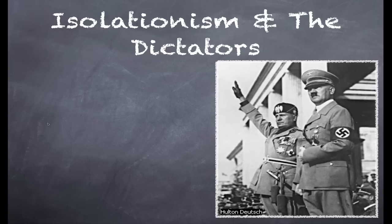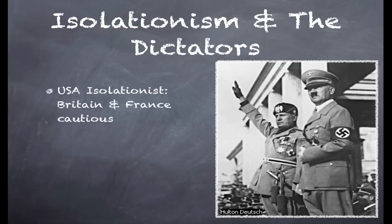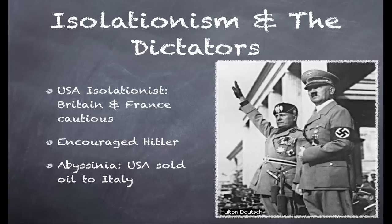This isolationism encouraged the fascist dictators. It also made Britain and France more cautious, because they knew they couldn't rely on the United States for any help or support. It encouraged Hitler — he didn't have to worry about potential interference from America. For example, in the 1930s, Italy invaded the African country of Abyssinia. The League of Nations should have been able to use trade sanctions, but the United States, a non-League member, simply continued to sell oil to Italy.